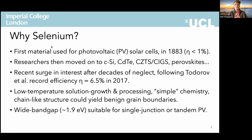So why are we looking at selenium in the first place? Selenium was actually the very first material to ever be made into a solar cell back in the 1800s, but of course the efficiency was very low. Solar cell research soon moved on to silicon, cadmium tellurides, CdSe, and more recently perovskites, with selenium essentially being ignored for around a century. Recently, however, it has experienced a surge in interest after a leap in the record efficiency to 6.5% by Todorov et al. in 2017.